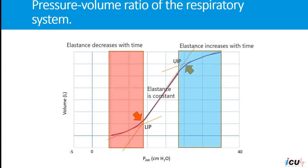It has been postulated that tidal volume should occur in this central zone of the PV tracing between the lower inflection point and the upper inflection point.